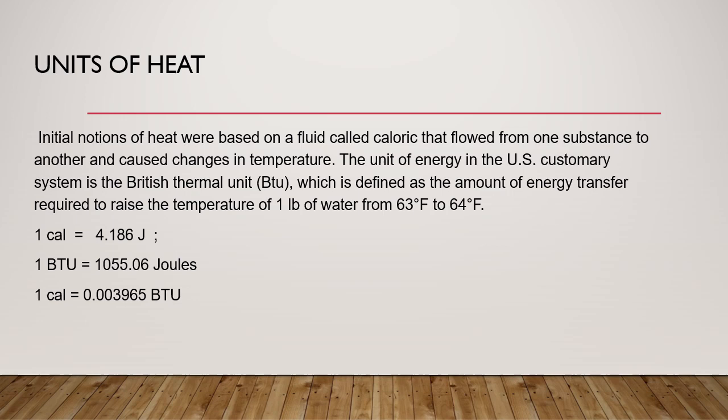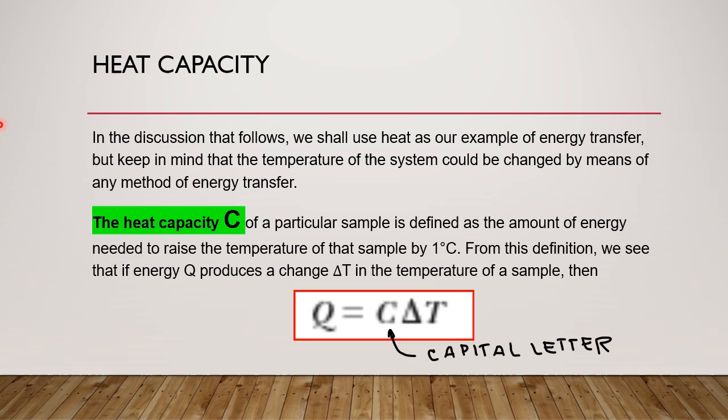Let's discuss heat capacity. In the discussion that follows, we shall use heat as our example of energy transfer. Q equals capital letter C multiplied by delta T. The capital letter C is the heat capacity. The heat capacity of a particular sample is defined as the amount of energy needed to raise the temperature of that sample by 1 degree centigrade.